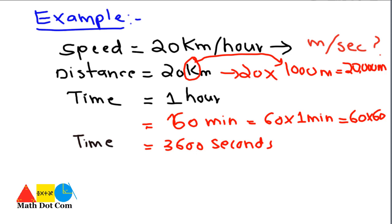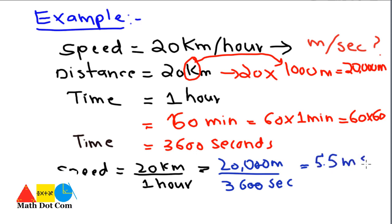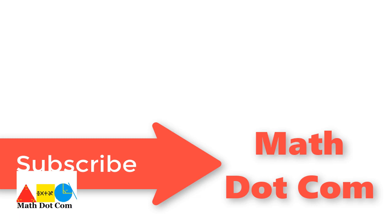Now the speed equals distance divided by time. We replace 20 kilometers with 20,000 meters and one hour with 3600 seconds. Simplifying 20,000 divided by 3600 gives us 5.5 meter per second. So we have successfully converted the speed from 20 kilometers per hour to 5.5 meter per second. Thank you for watching — if you like this video, please subscribe.